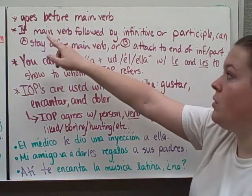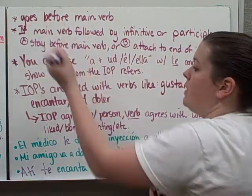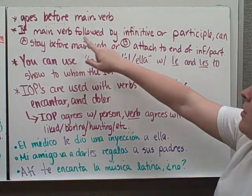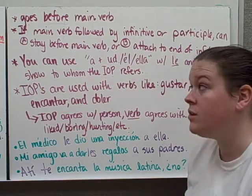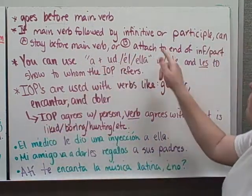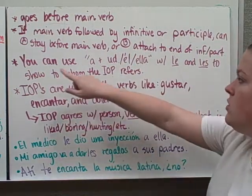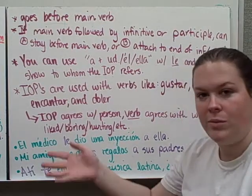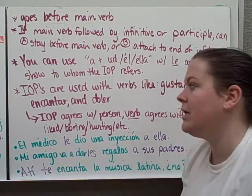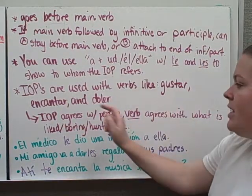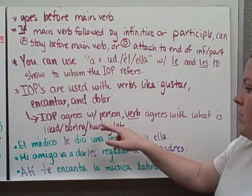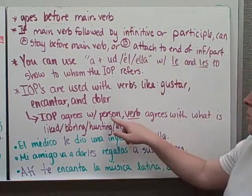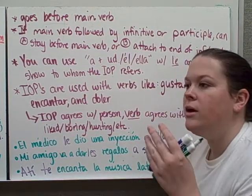Some things to note: the indirect object pronoun goes before the main verb — like le compré, bought it for him. If the main verb is followed by an infinitive or a participle, just like with other pronouns, it can either stay before the main verb or attach to the end of the infinitive. You can use a usted, a él, or a ella with le and les to show to whom the pronoun refers. They're used with verbs like gustar, encantar, and doler. The pronoun agrees with the person, but the verb agrees with what is being liked, what hurts, what is boring, what they love.